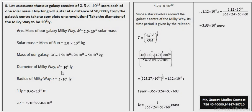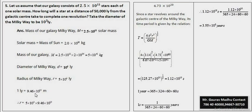Diameter of milky way galaxy given है approximate 10 raised to power 5 light year। इसको radius में convert करने के लिए 2 से divide किया, तो ये आगया 5 x 10 raised to power 4 light year। एक light year के अंदर distance होता है 9.46 x 10 raised to power 15 meter। तो हम अगर एक light year को multiply करेंगे तो total radius निकलेगी।